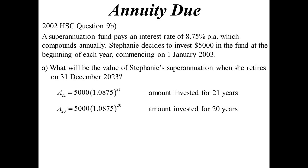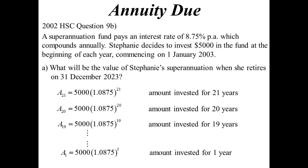In 12 months time, she's going to put another $5,000 in, but it's only going to be in there for 20 years. So it will grow to be 5,000, 1.0875 to the power of 20. Then the next year she puts another amount in, but that's only in there for 19 years. And she keeps doing that till eventually there's 12 months to go. She puts her last $5,000 in and it'll be in there for one year.